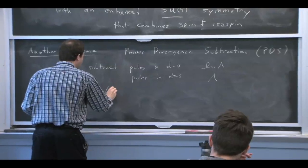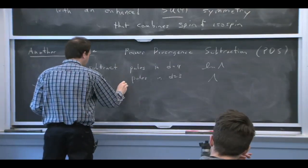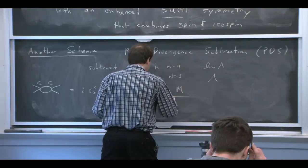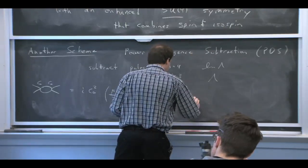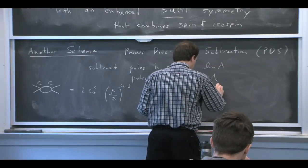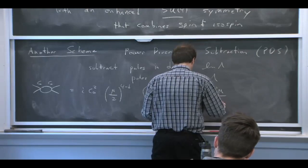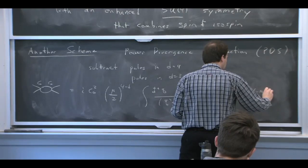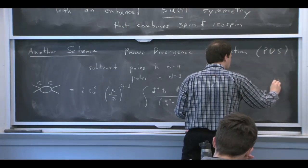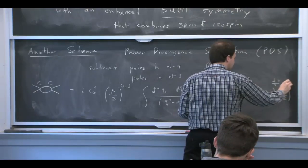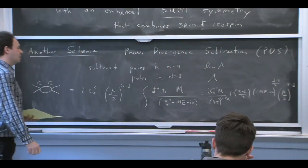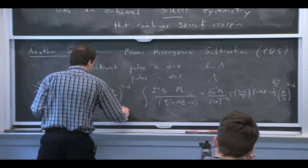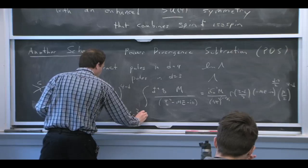So this is a dimreg type scheme. We're going to get the power of mu from the mu to the 2 epsilon that we have out front. So if I just write this guy down in d dimensions, here's what it looks like. And I've normalized mu slightly differently than we usually do, just because it's convenient for this scheme to do that. So it's not exactly the same as MS-bar. It's mu over 2 that I'm putting in. Other than that, it's the same kind of setup as MS-bar. You'll see why I want to put that 2 there in a minute.